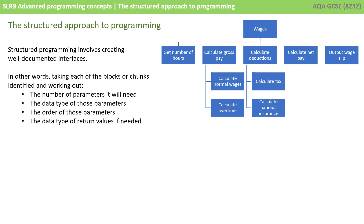Structured programming involves creating what we call well-documented interfaces. What we mean by that is being able to take each of these blocks or chunks we've identified and work out the number of parameters that would be needed, the data type of those parameters, the order of those parameters, and the data type of any return values if it's going to become a function. Once we've broken down a program in this structured way, as shown here in this diagram, this actually becomes quite easy to do.